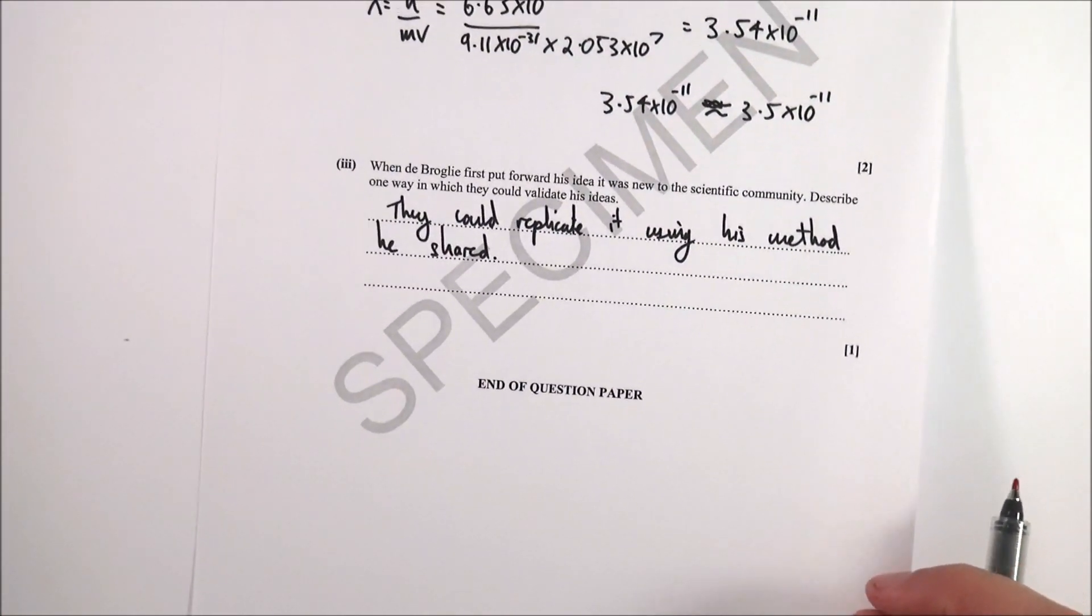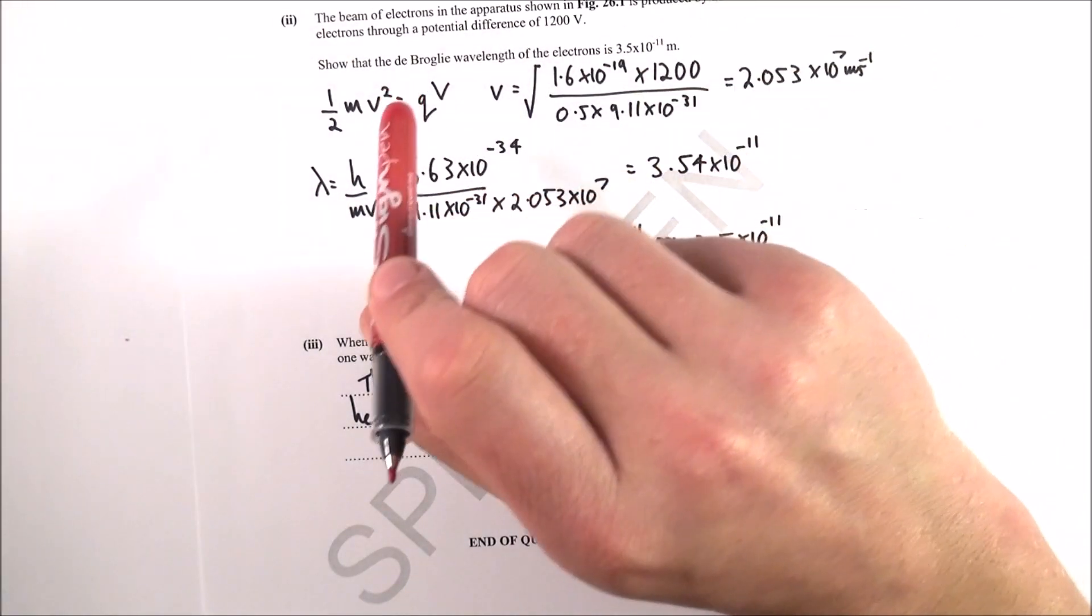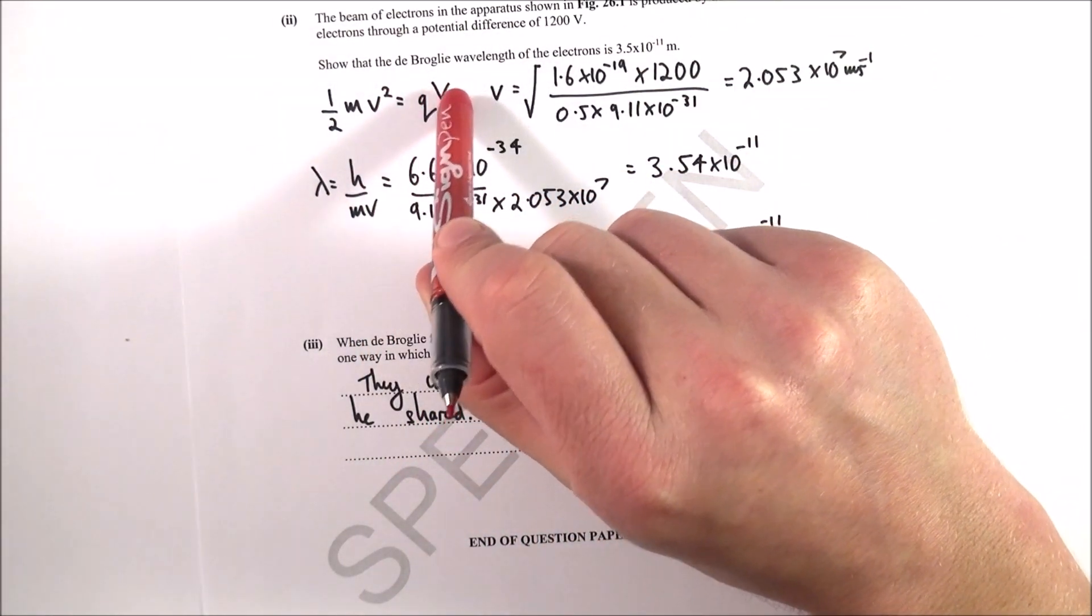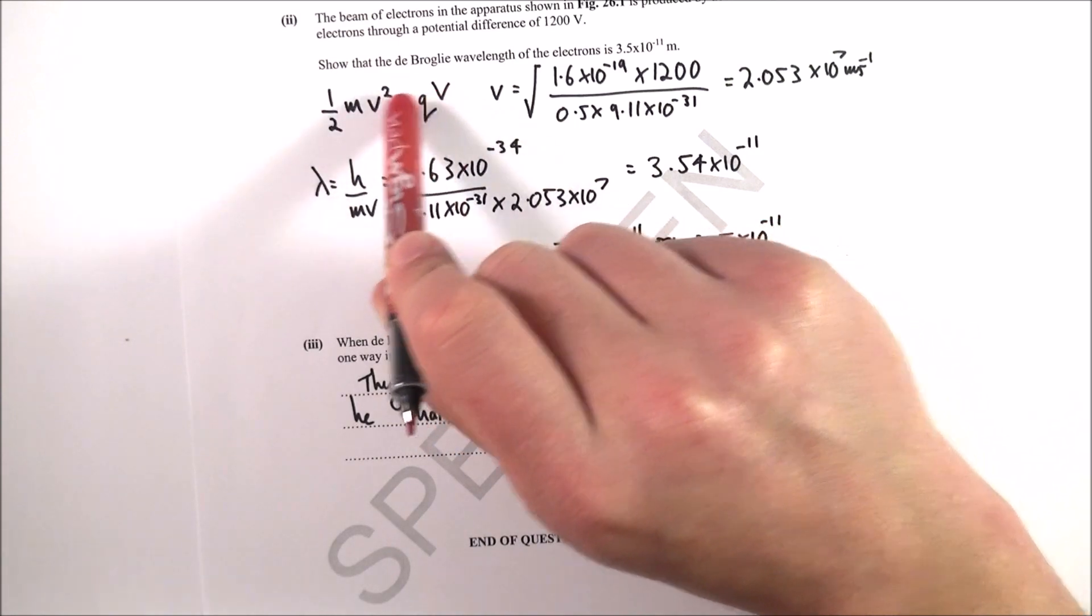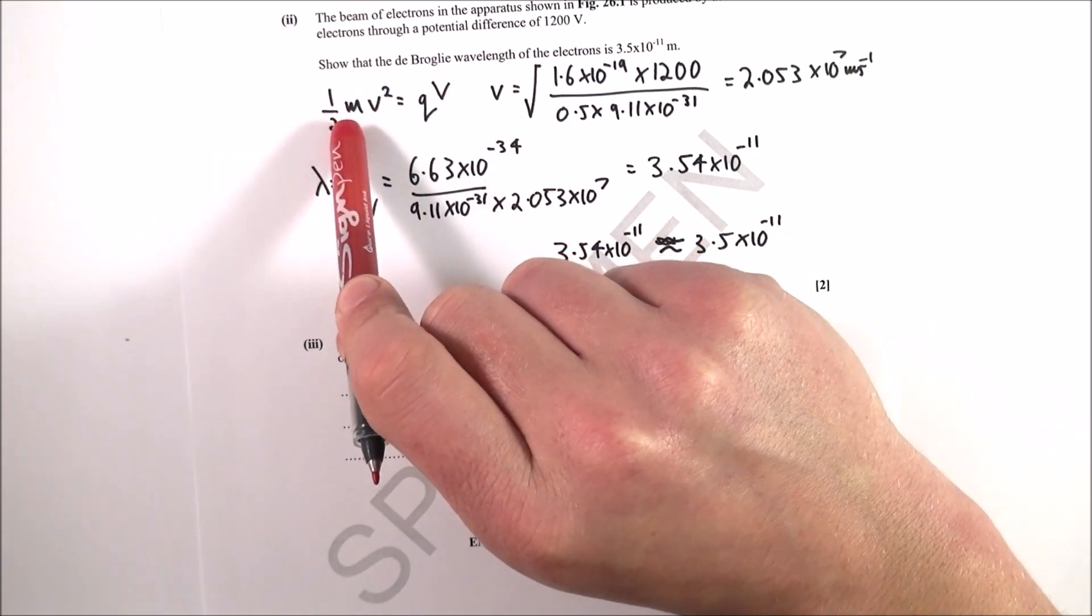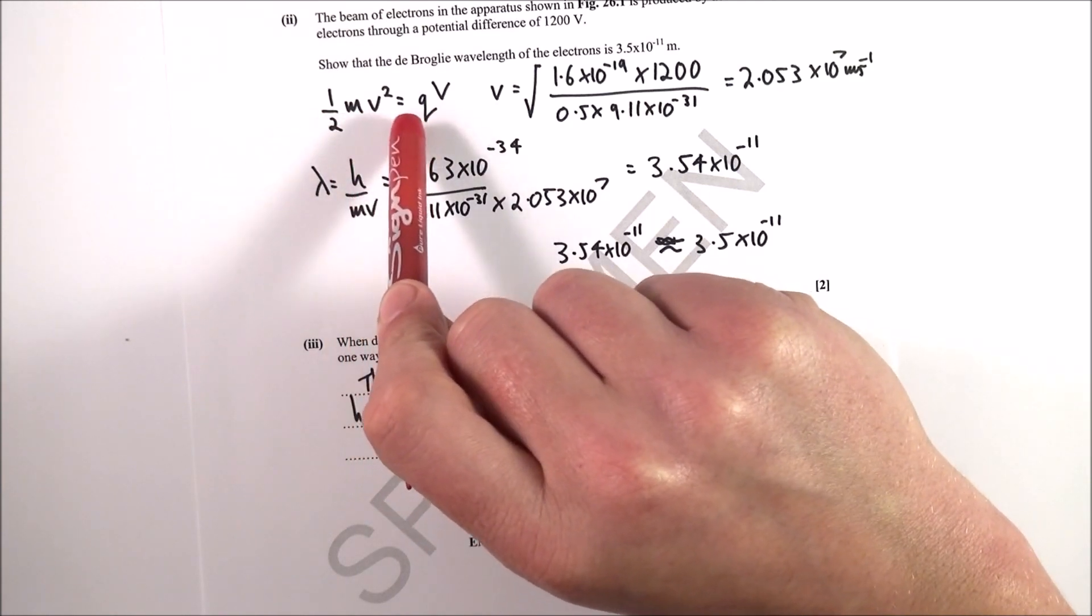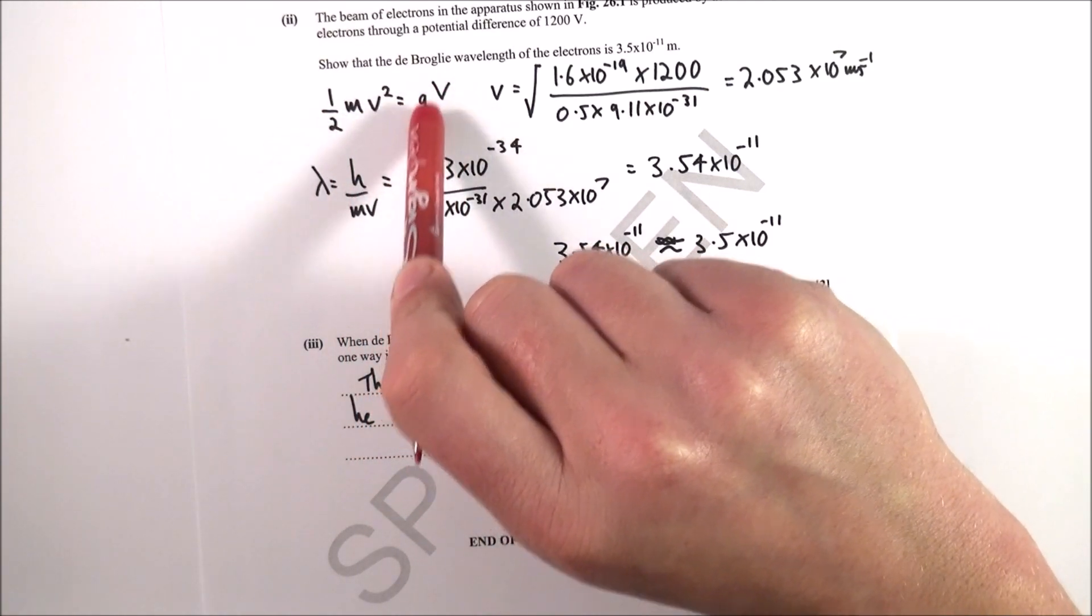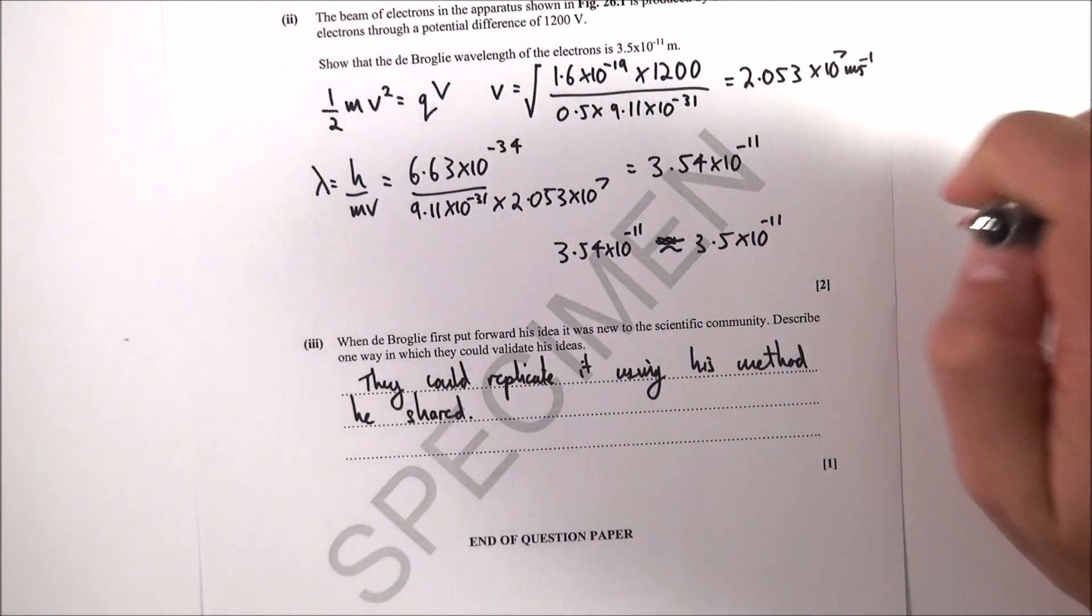Then some calculations. Basically, you're accelerating electrons through a potential difference. The energy gained equals the charge multiplied by the PD, which equals the kinetic energy of an individual electron. Therefore, I can rearrange to say v equals square root of qV over half m. I've worked this out to be 2.053×10^8 m/s.